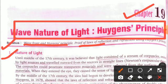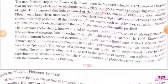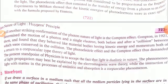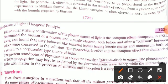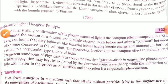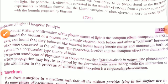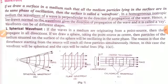First, we have to discuss what is the nature of light. The present standpoint of physicists is to accept the fact that light is dualistic in nature — light behaves like a particle as well as a wave. The phenomenon of light propagation may be best explained by the electromagnetic wave theory, while the interaction of light with matter, such as emission and absorption, is a corpuscular phenomenon.